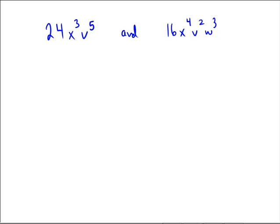We're going to go with 24, 48, 72, 96. The least common multiple is 96 for 24 and 16. 24 times 4 is 96, and 16 times 6 is 96. For the X's, on the left we have cubed, and on the right we have 4, so we'll take 4 because that is the bigger of the exponents.